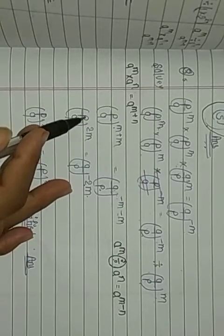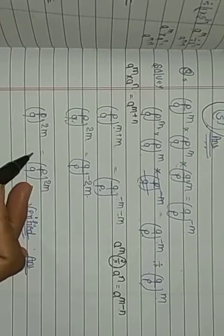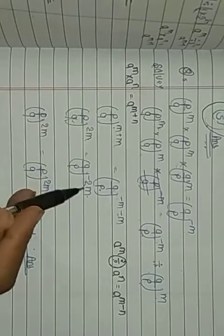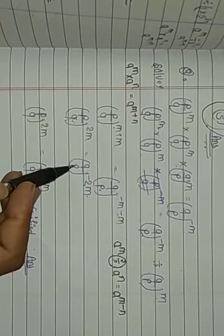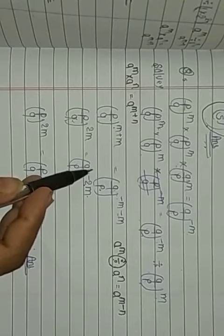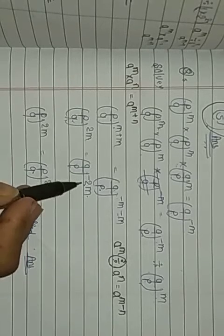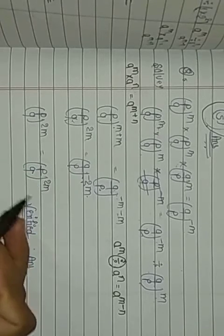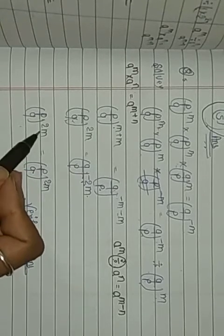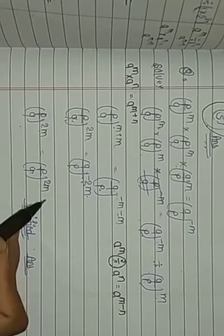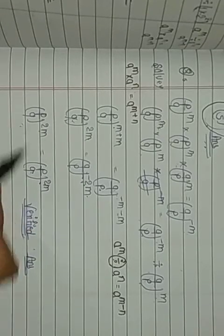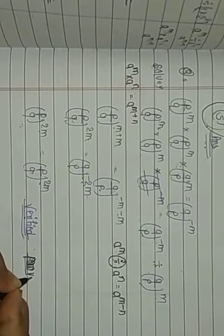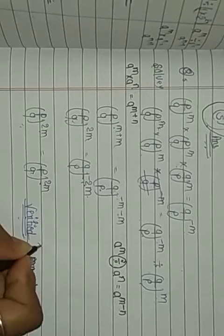Now we have P/Q^(2M) on the left side and Q/P^(-2M) on the right side. To make them the same, we take the reciprocal of Q/P, which gives P/Q, and the power sign changes from negative to positive. So P/Q^(2M) = P/Q^(2M). Both sides are equal, so this is verified and proved.